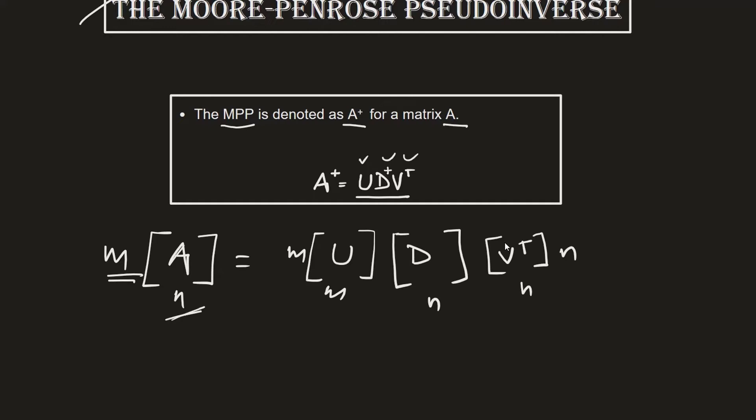V transpose will be an n by n matrix which is also called as a right singular vector representing to the number of columns in the matrix A. And by the way the D plus that we have here as the second element, it is nothing but the inverse for this matrix D. So all we need to do is calculate the reciprocal of all the diagonal elements within this matrix D and we will get our D plus matrix.